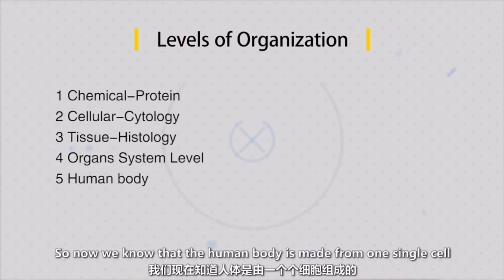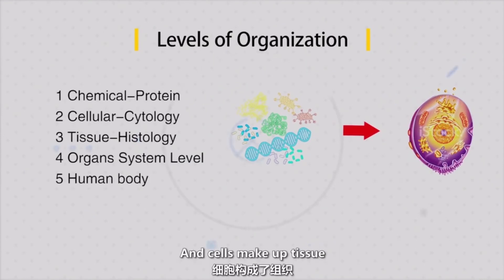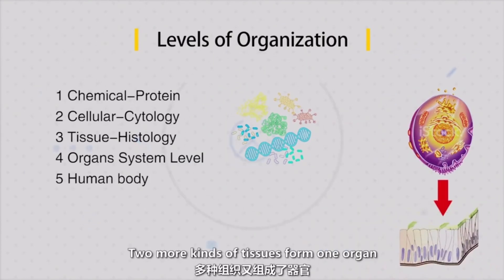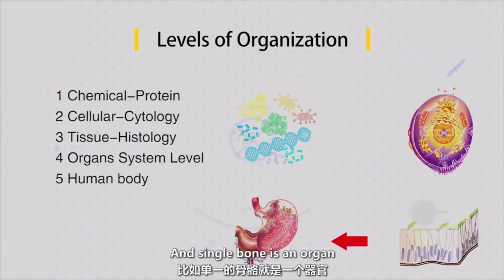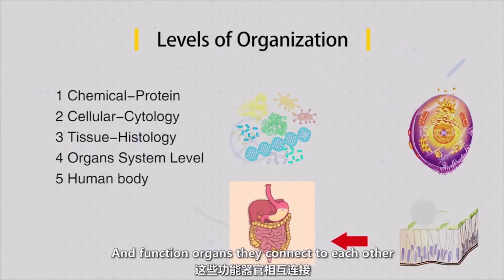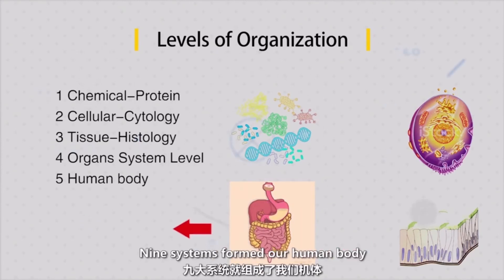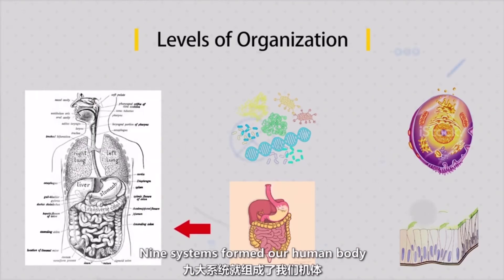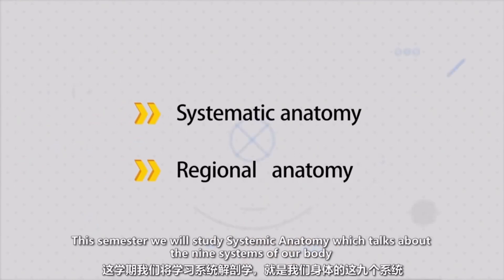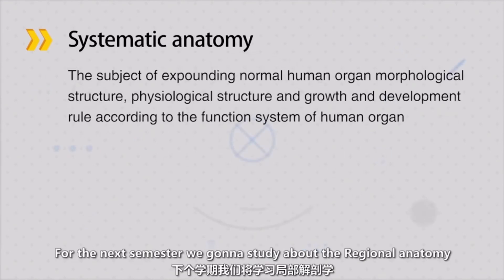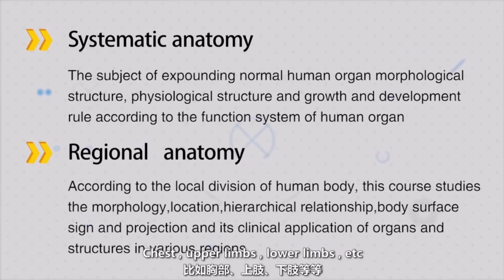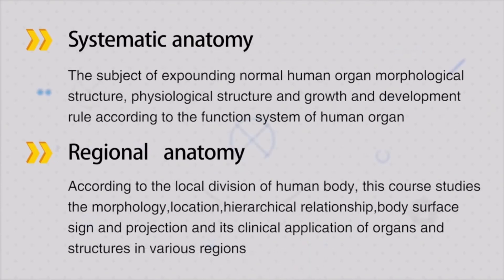So now we know the human body consists of one single cell, and cells form tissues. Two or more kinds of tissues form one organ — for example, a single bone is one organ. Organs with the same function connect to each other, and we call that a system. Nine systems form our human body. This semester we talk about the human body system by system — we call this systematic anatomy. Next semester we will dissect the body and study one area after another — for example, the chest, the upper limbs, and the lower limbs — and that's what we call regional anatomy.